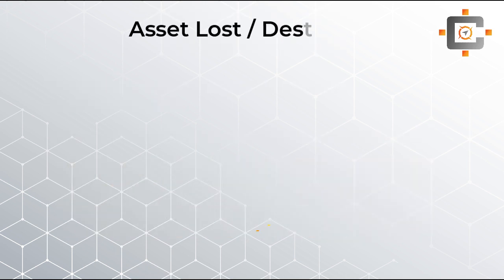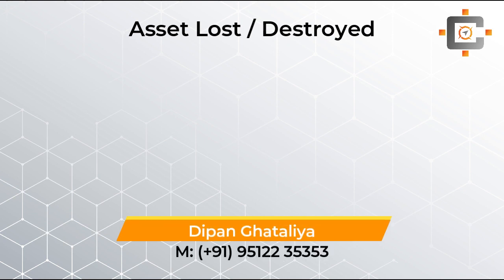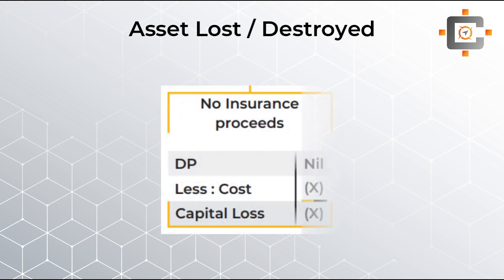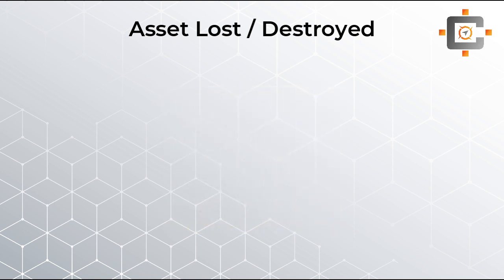Now the next important topic: assets lost or destroyed. There are two possibilities — either the person has taken insurance or they haven't. If no insurance was taken, the disposal proceeds or insurance proceeds will be nil, but they already incurred the cost at the time of purchase, so deducting cost from nil results in a capital loss.